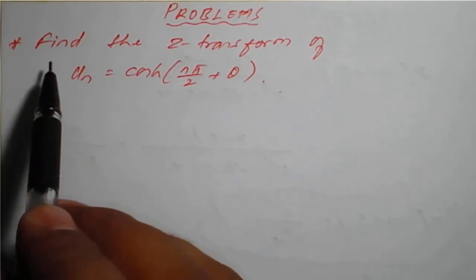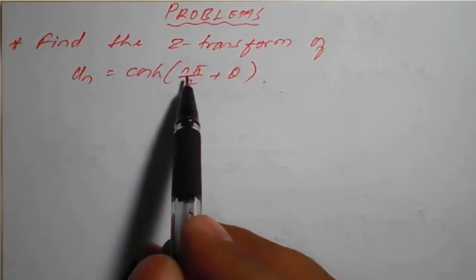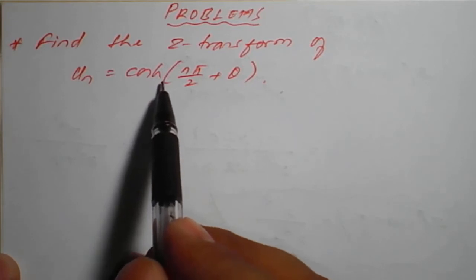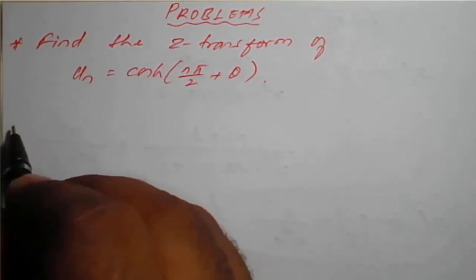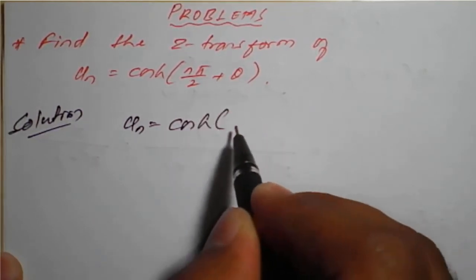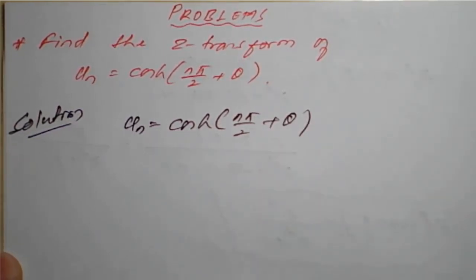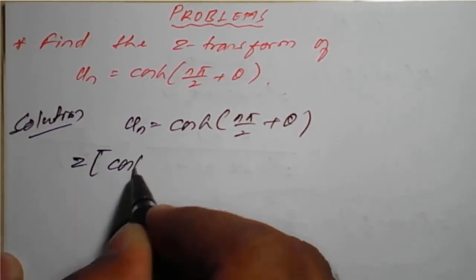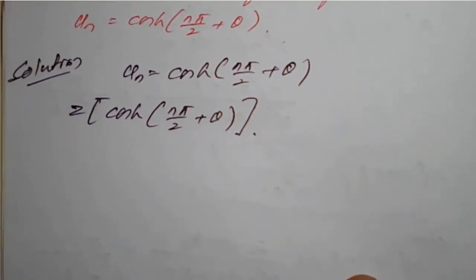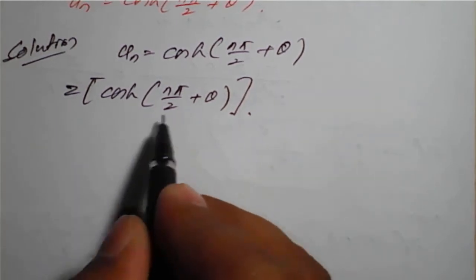Hello students. The problem is to find the Z-transform of u(n) = cosh(nπ/2 + θ). We need to find the Z-transform of cosh(nπ/2 + θ). We'll apply the exponential formula to simplify this expression.